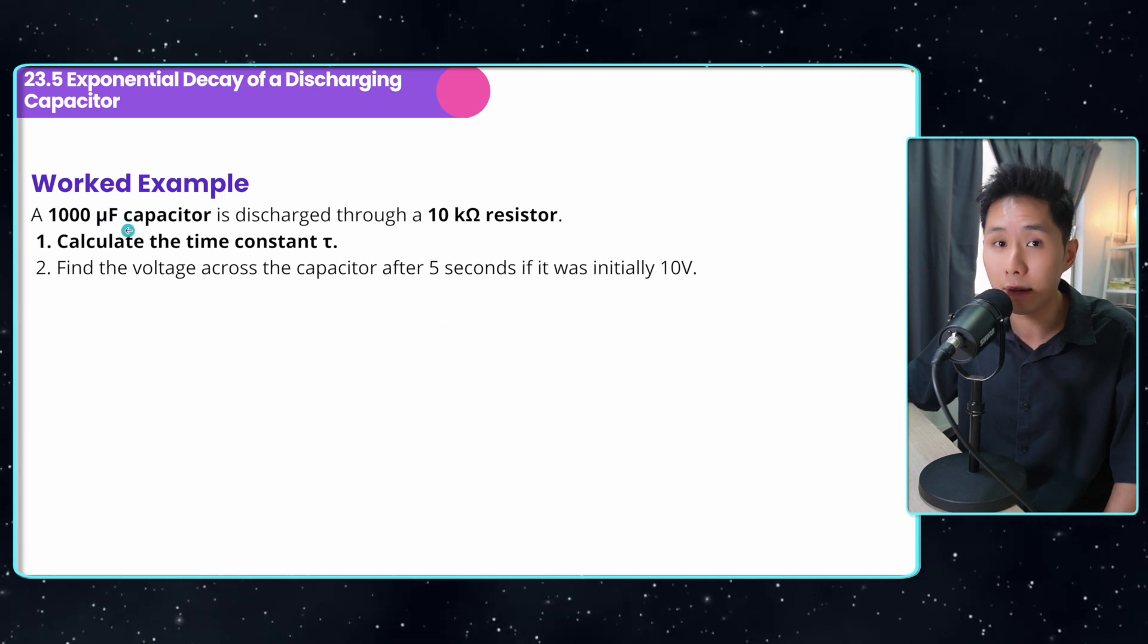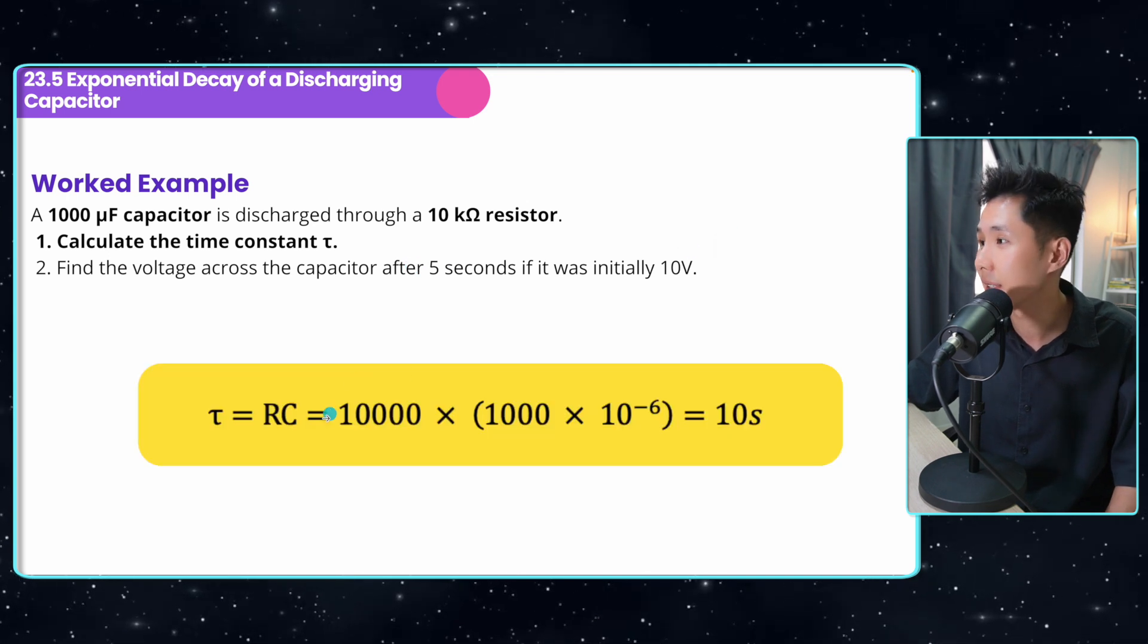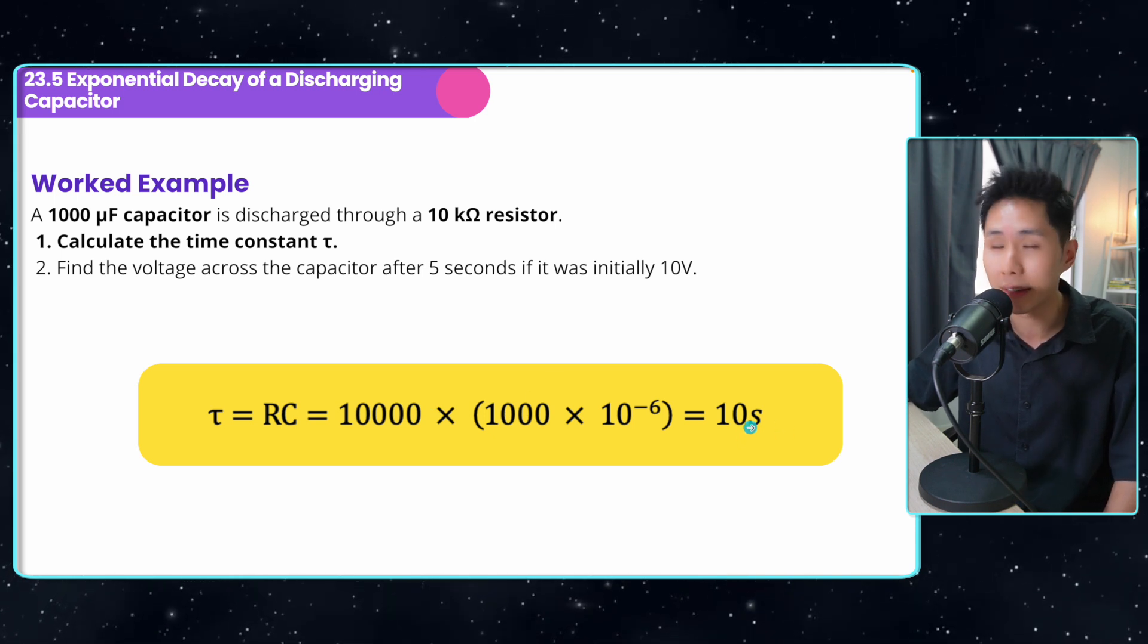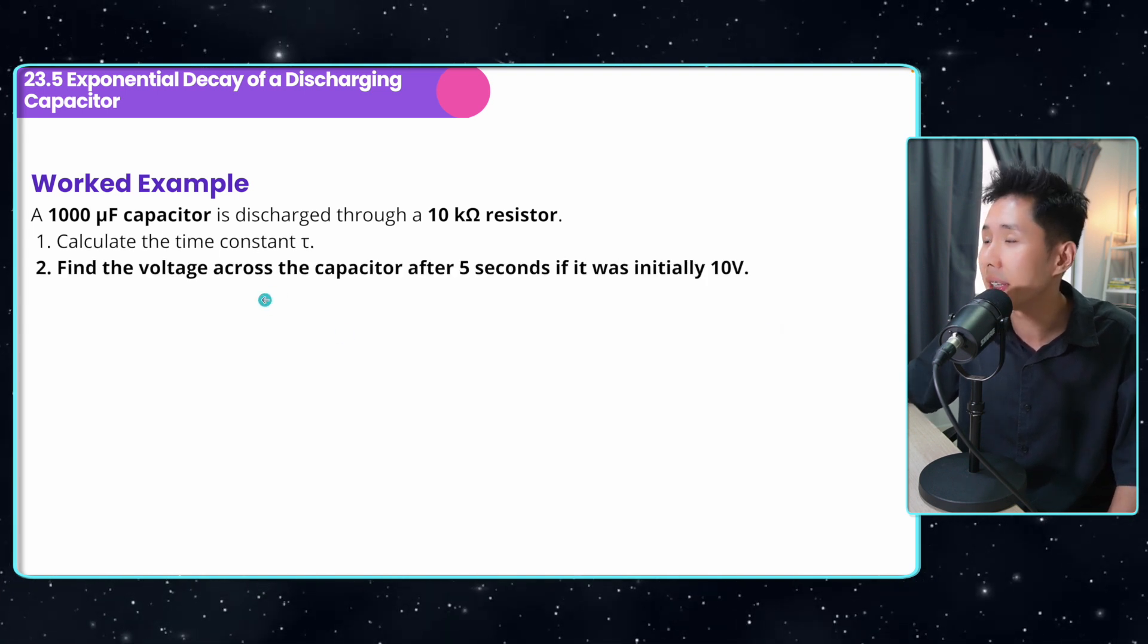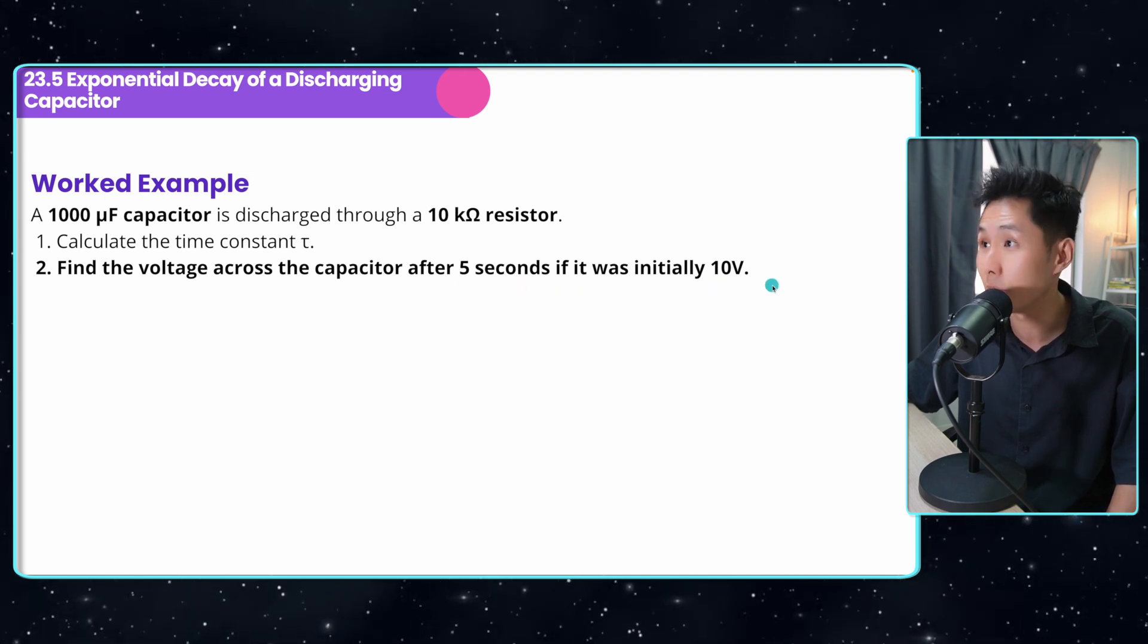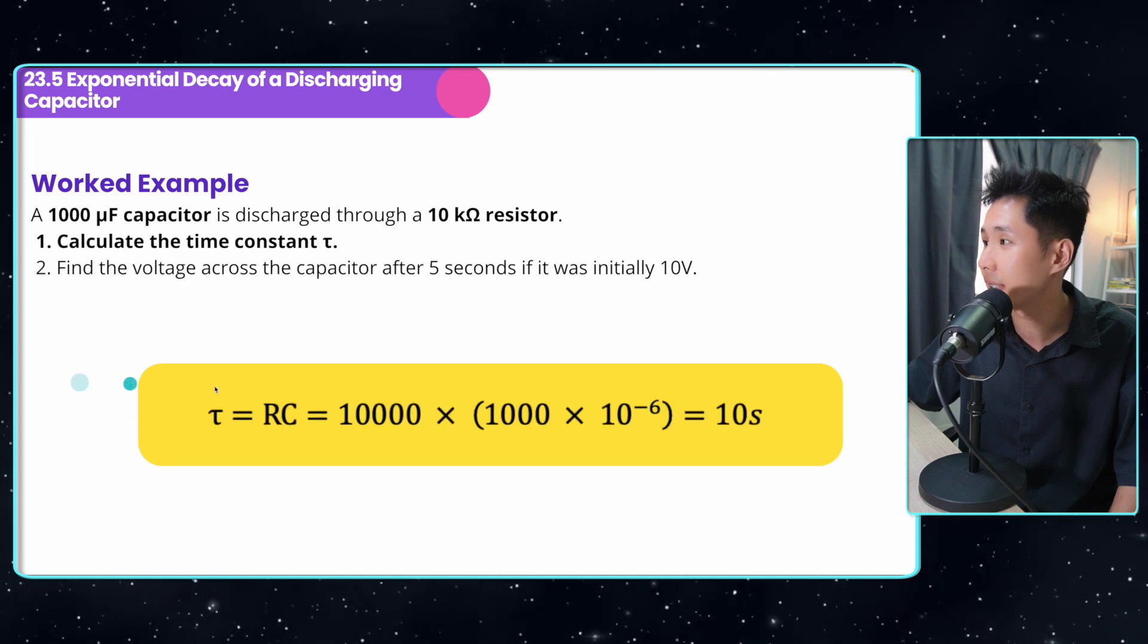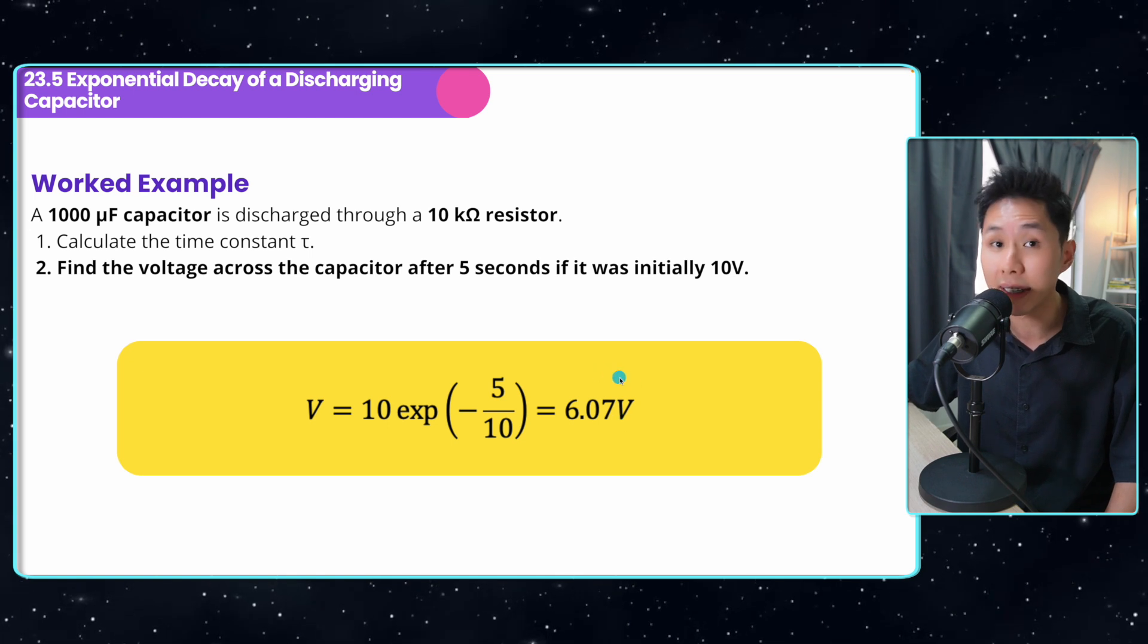I have a 1000 microfarad capacitor connected to 10k ohm resistor, calculate the time constant. So I can just use R times C, which will give me the amount in seconds, because that's the amount of time for the charge to drop to 37%. Next question, find the voltage across the capacitor after five seconds, if it was initially 10 volts. Again, I could use the formula here, 10 is the initial voltage, exp 5 over 10 is the value of RC here, which is what we calculated. And this is the amount of voltage after five seconds.